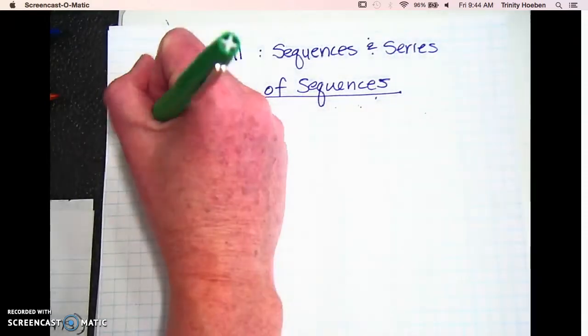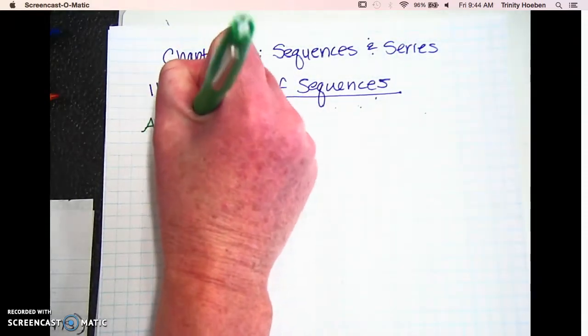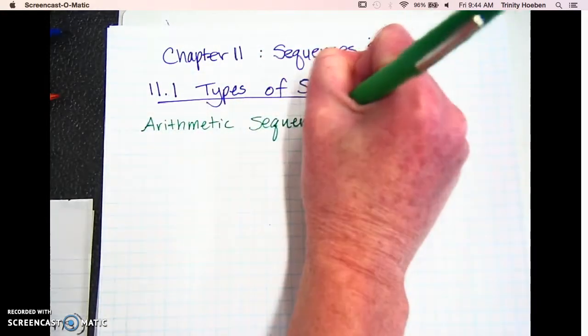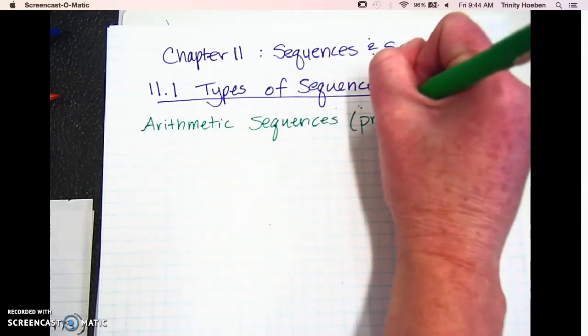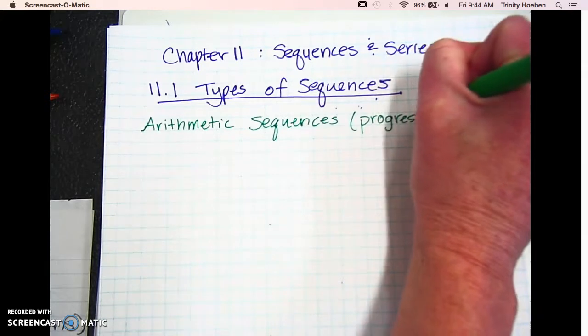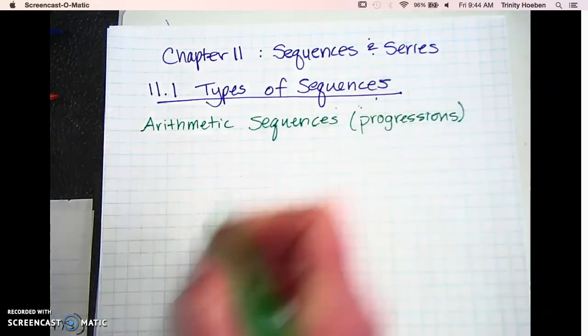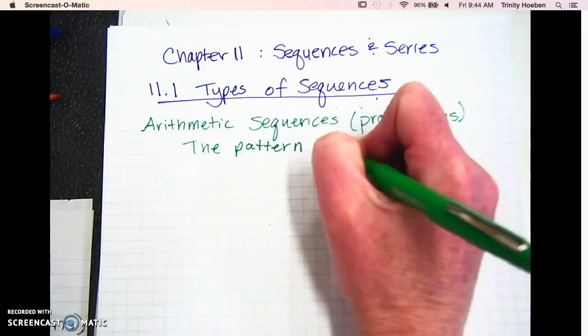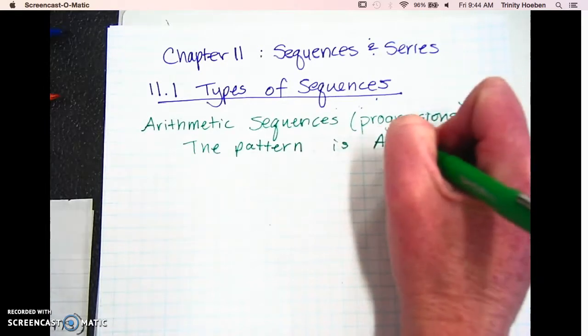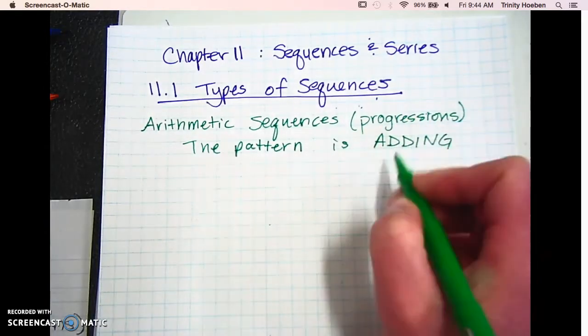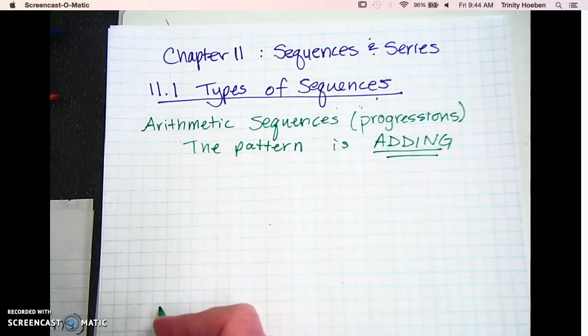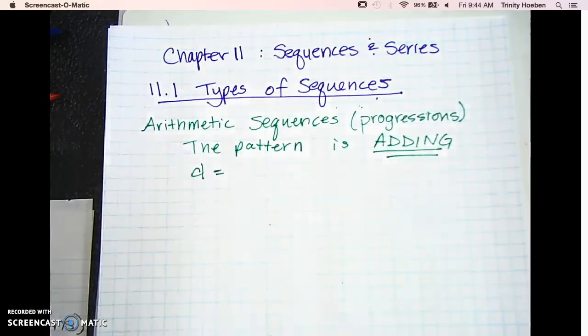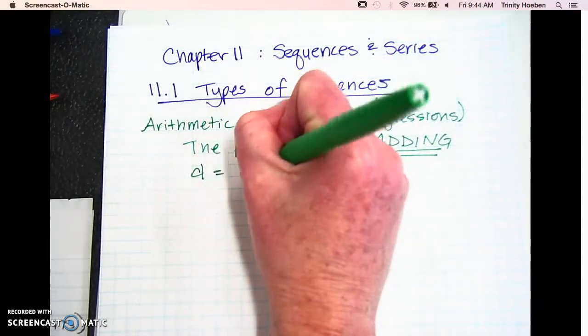And so the first one we're going to talk about is the arithmetic sequence, sometimes referred to as progressions. You're going to see a pattern. And this one, the pattern is going to be adding. And every time you see it, you're going to get a d. So d, if you're asked to find d, is going to be the common difference.